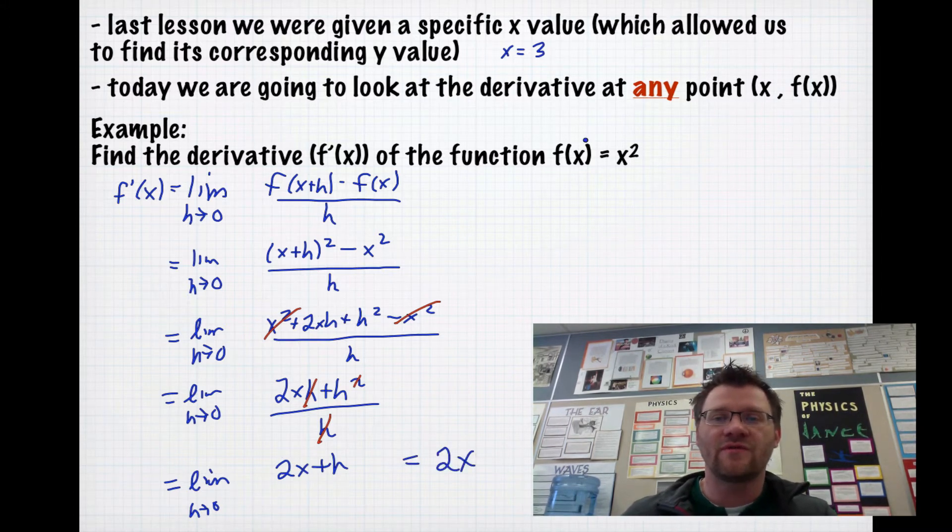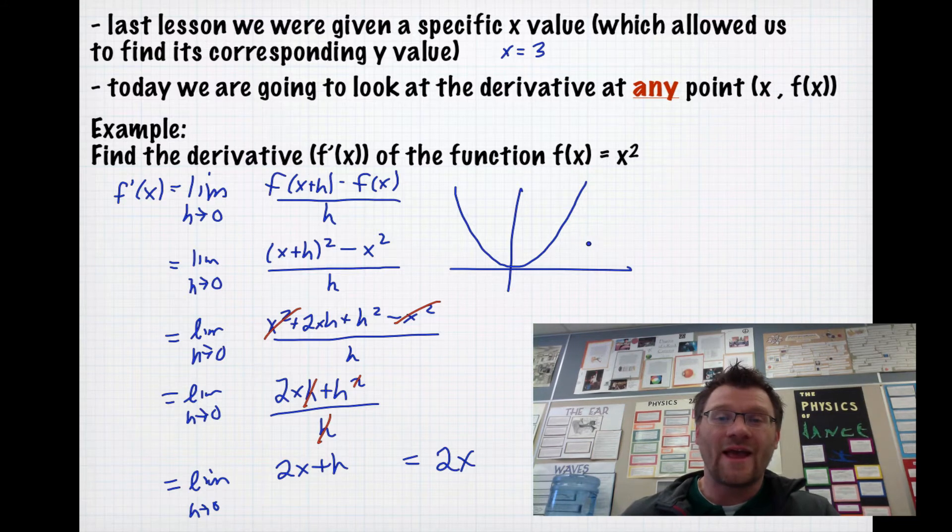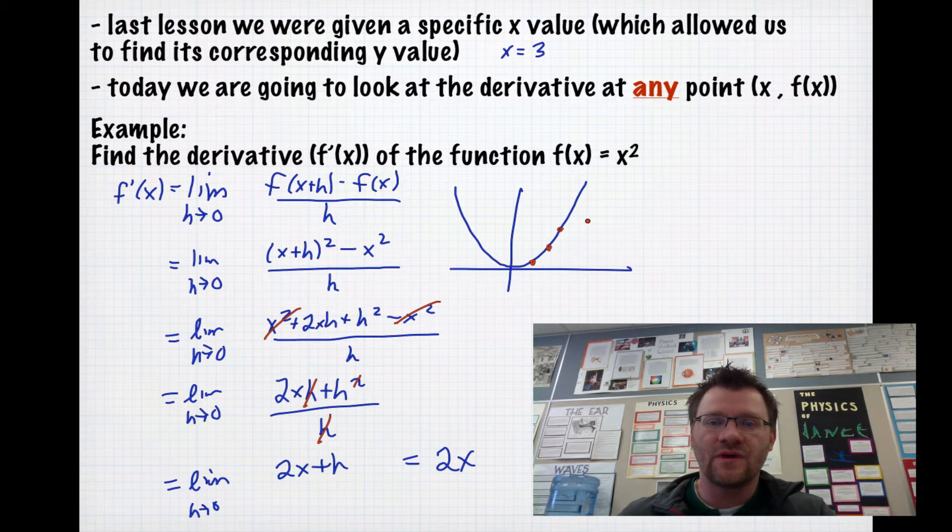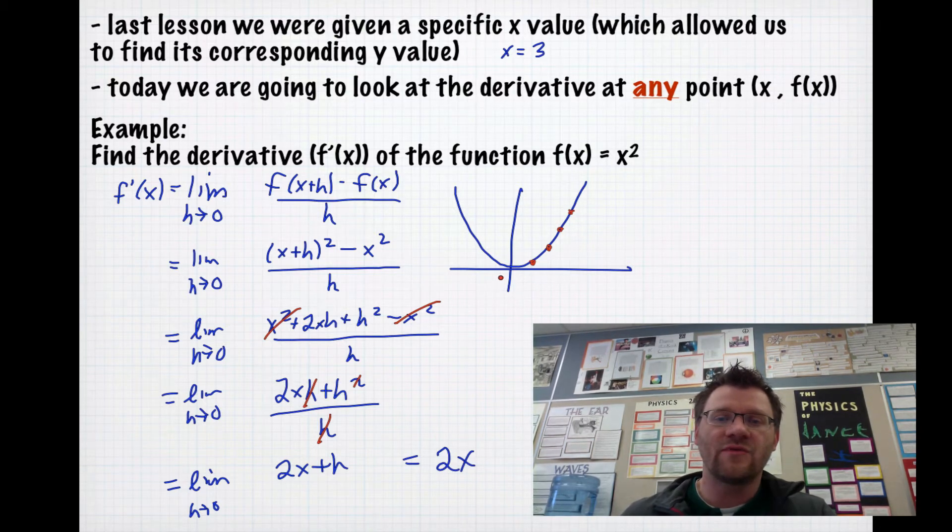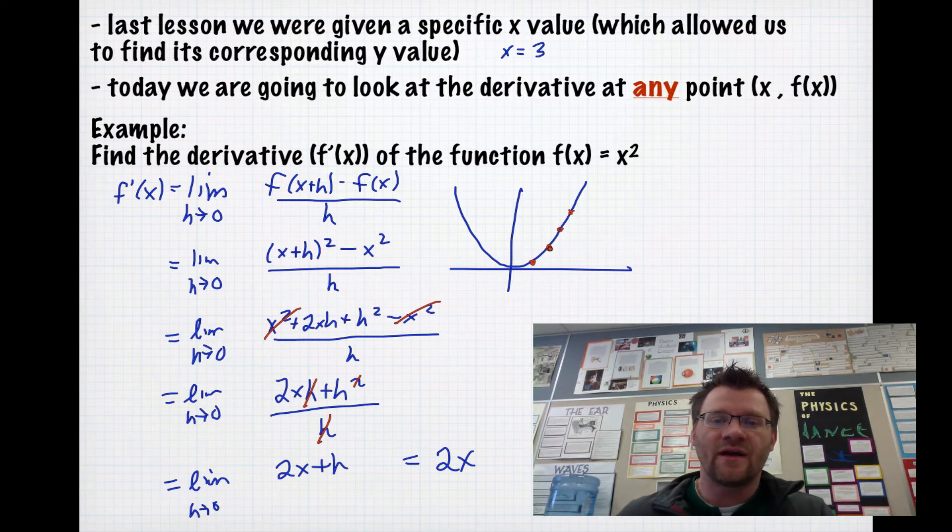All that means is with this normal parabola that looks like this, we can now find the slope at any point. If x equals 1, or if x equals 2, or 3, or 4, we can just plug that x value in and we can see how the slope of the tangent line changes at each value of x. If x equals 1, then the slope at this point is going to be 2. The slope at x equals 2 is 4. The slope at x equals 3 is 6, etc.